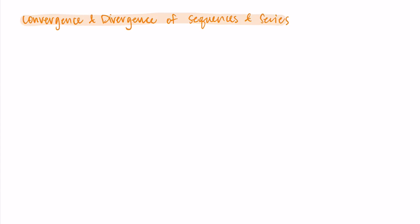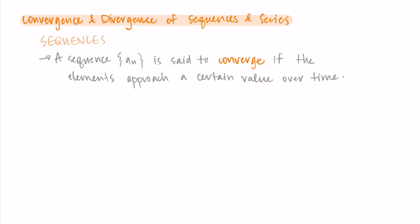In this video, I'm going to talk specifically about sequences and their convergence and divergence. So we say that a sequence a sub n is to converge if the elements approach a certain value over time. Basically, this means that a sequence, which is like a list of numbers, converges if those numbers get closer to something over time.